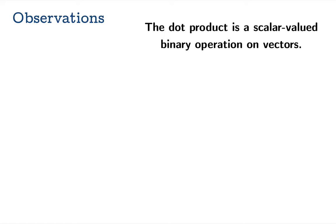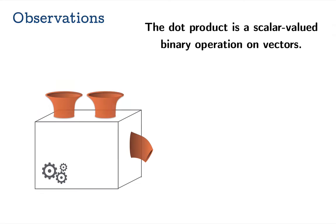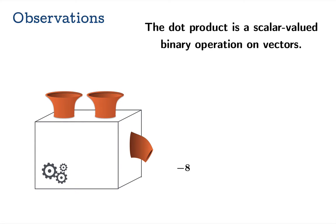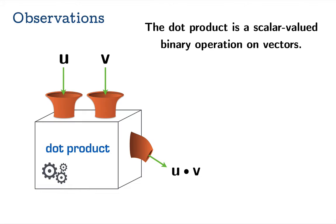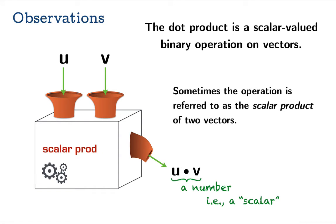Here's a fancy statement: the dot product is a scalar-valued binary operation on vectors. What it really just means is you take two vectors, operate on their components, and spit out a single real number. In the context of vectors, a number is often called a scalar, which is why this product is sometimes called the scalar product. Other synonyms you might hear are inner product — scalar product, dot product, and inner product all mean the same thing.